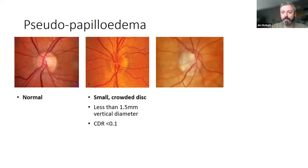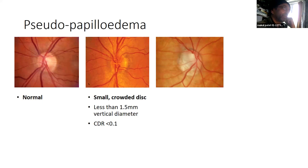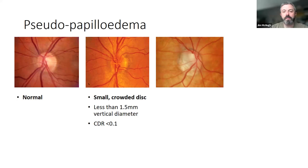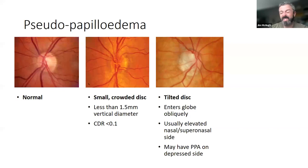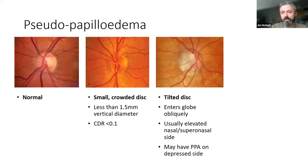This one looks like it's tilted. This is a really tilted disc — I've taken an extreme example. It's classic for myopes. They've got a long globe, the optic nerve enters the globe obliquely, so one side is lifted up relative to the retina and the other side is depressed. It's usually the nasal side which is lifted up, or the supranasal side. They'll quite often have some peripapillary atrophy on the downhill side.